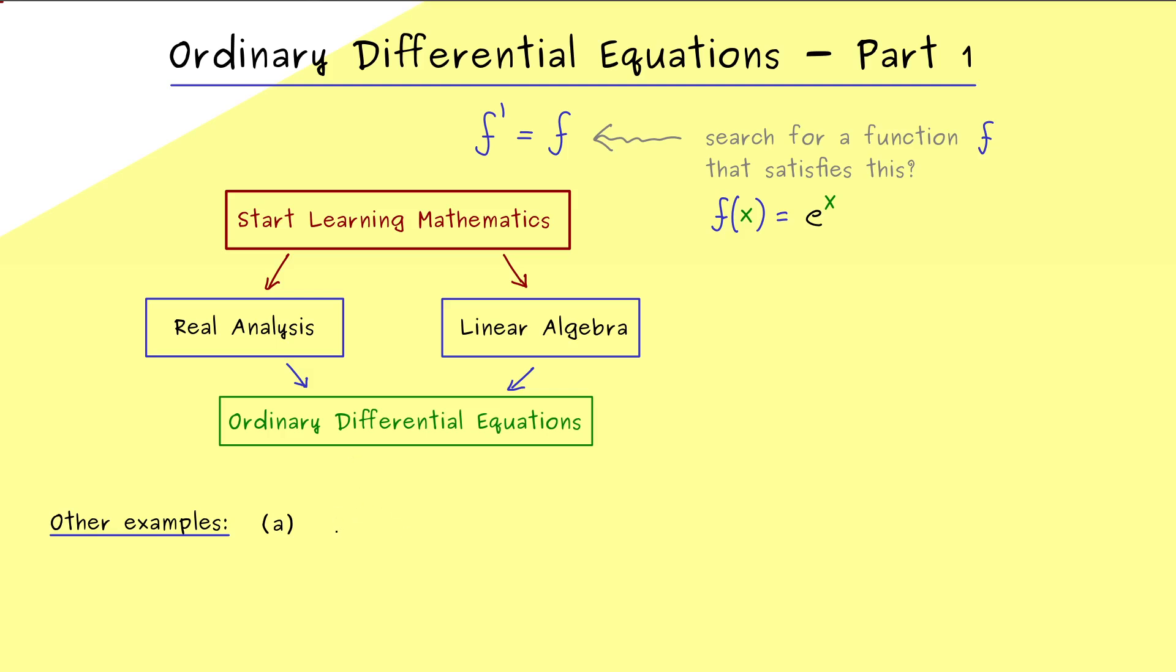So for example you might know that in physics one uses dots for denoting the time derivative. Hence this here is the second derivative of the function x of t. And now this should be equal to omega squared x. Indeed in physics this equation here describes a so called harmonic oscillator.